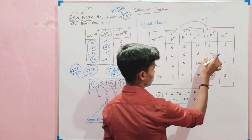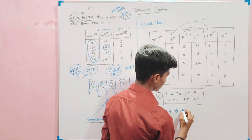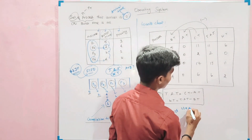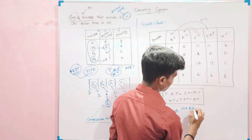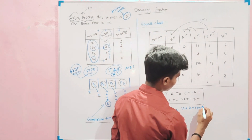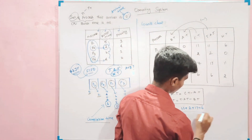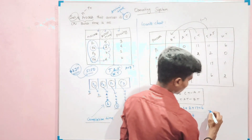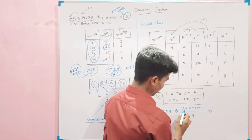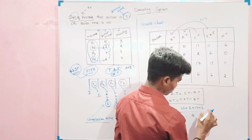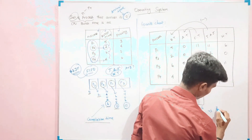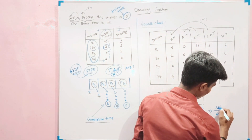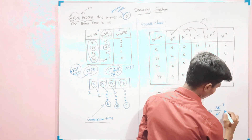Average turnaround time: sum of all TAT values divided by total number of processes. 11 plus 2 plus 17 plus 6, divided by 4. That gives us 36 divided by 4, which equals 9.